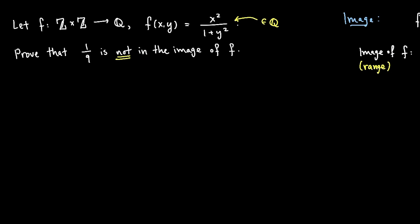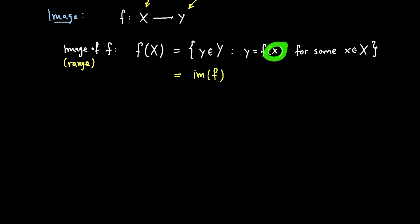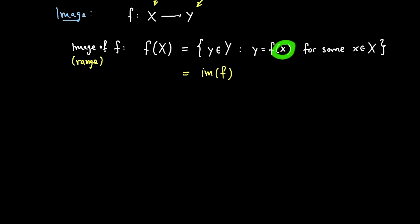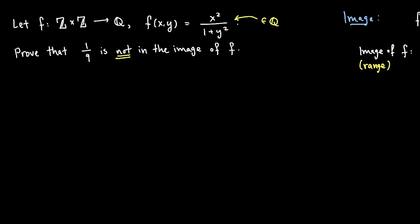And usually if you want to prove that something is not in an image, proof by contradiction works. Because then what I want to show is that 1 over 9, there's no x value that produces 1 over 9. And to show that something doesn't exist, that there doesn't exist an x, prove by contradiction usually works. Okay, so let's give that a shot. Let's try to prove this.